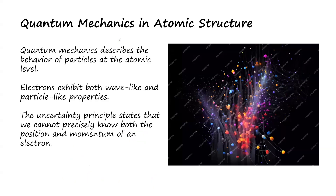So now the next thing we are going to look at is quantum mechanics in atomic structure. Quantum mechanics tries to describe the behavior of particles at the atomic level. For example, each electron exhibits both wave-like and particle-like properties. This is actually the duality nature of electrons. Some scientists say that electrons are a wave, and some scientists say that electrons are a particle. So in conclusion, according to scientists, electrons have a dual nature — they have both wave-like properties and particle-like properties.